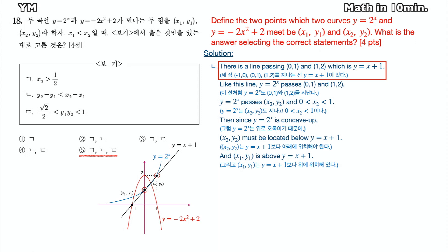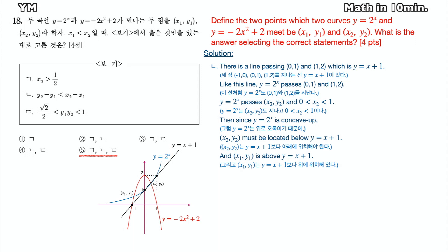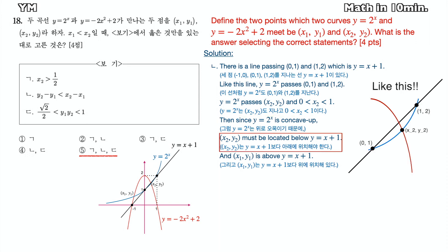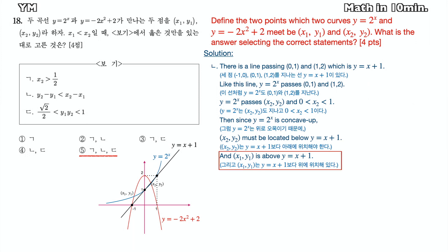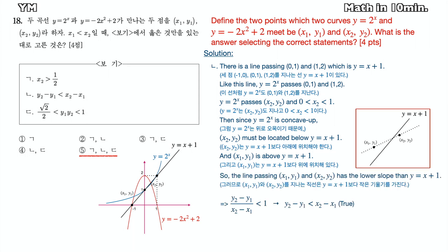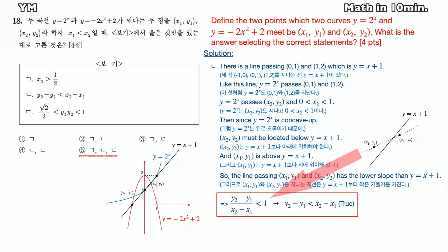There is a line passing (0,1) and (1,2), which is y equals x plus 1. The graph y equals 2 to the x power also passes these two points. Meanwhile, (x2, y2) is on y equals 2 to the x power and x2 is between 0 and 1. Since y equals 2 to the x power is concave up, (x2, y2) must be below y equals x plus 1. And since x1 is less than 0, (x1, y1) must be above y equals x plus 1, as shown in the picture. So the line passing (x1, y1) and (x2, y2) must have a lower slope than y equals x plus 1. So the second statement is true as well.